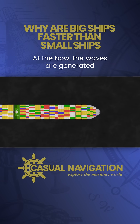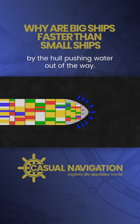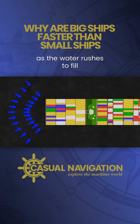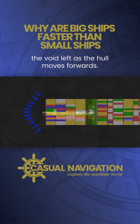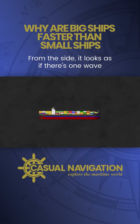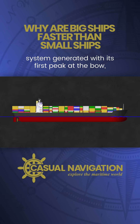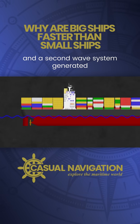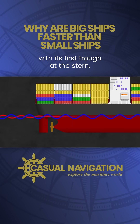At the bow, the waves are generated by the hull pushing water out of the way. At the stern, similar waves are generated as the water rushes to fill the void left as the hull moves forwards. From the side, it looks as if there's one wave system generated with its first peak at the bow, and a second wave system generated with its first trough at the stern.